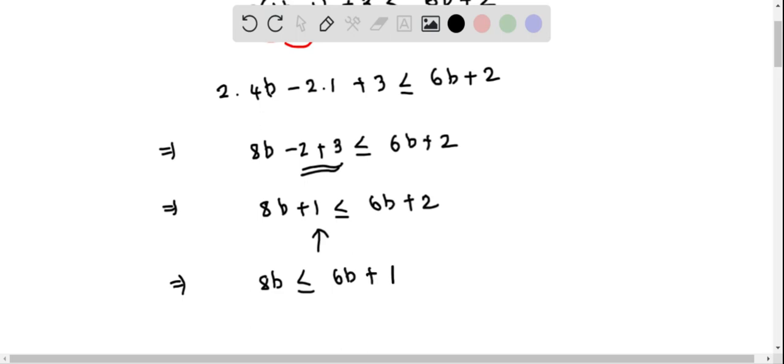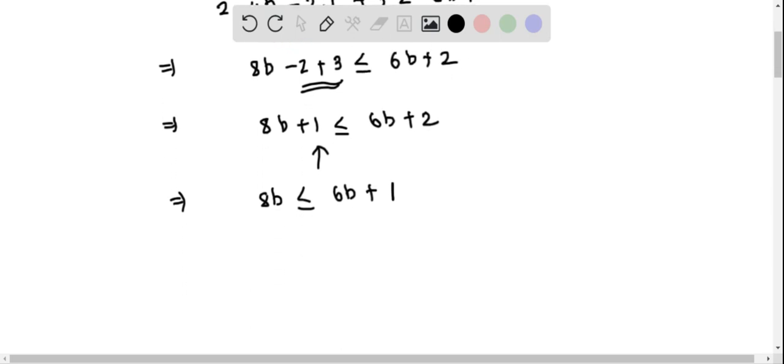Now we have to solve for b. We still have a b on the right side, so let's subtract this 6b from both sides. When we do that, we get 8b minus 6b less than or equal to 1. This simplifies to 2b less than or equal to 1.